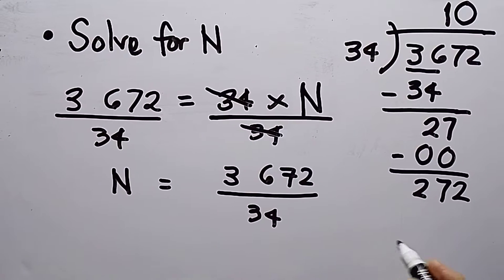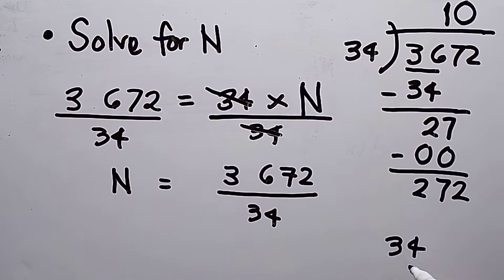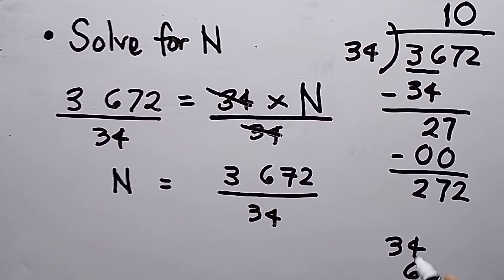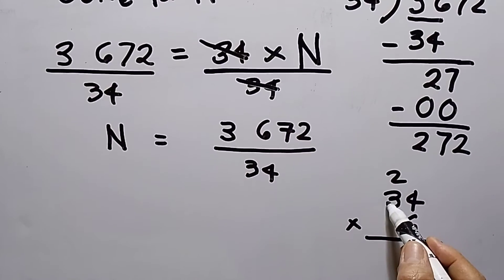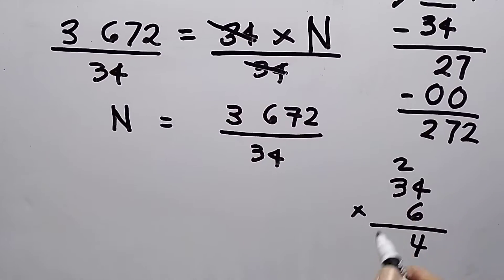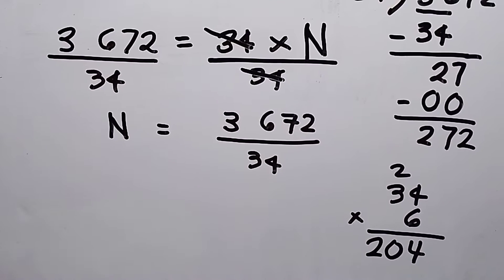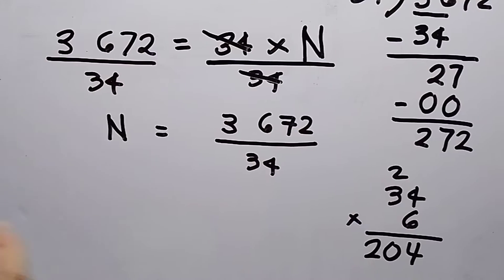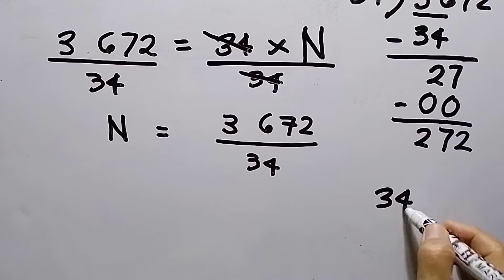34, so let's try 34 times, let's say 6. So this will be 24 carry 2. This will be 3 times 6 is 18 plus 2, that is 20. 204, need to raise up. 34 times 8.